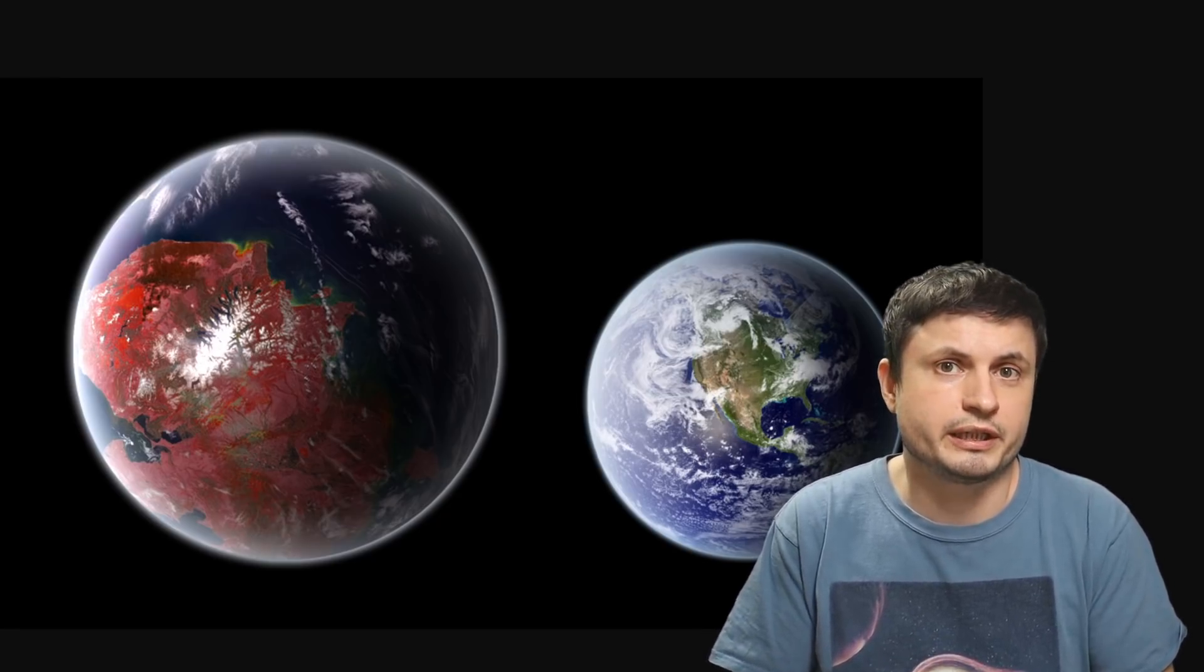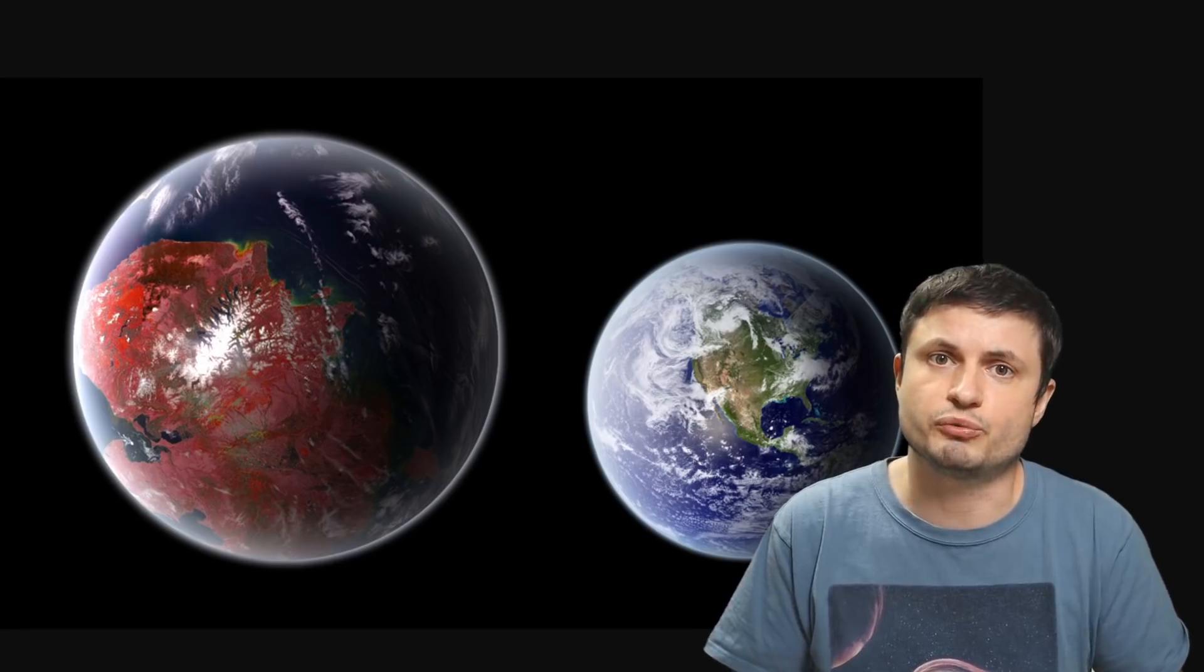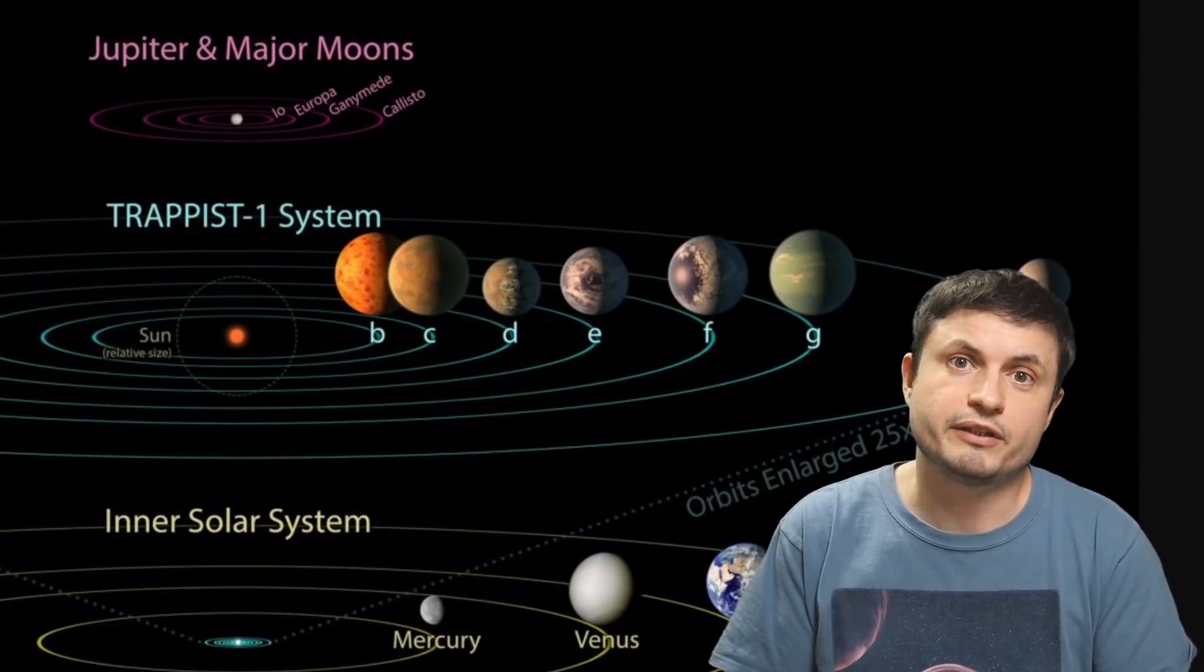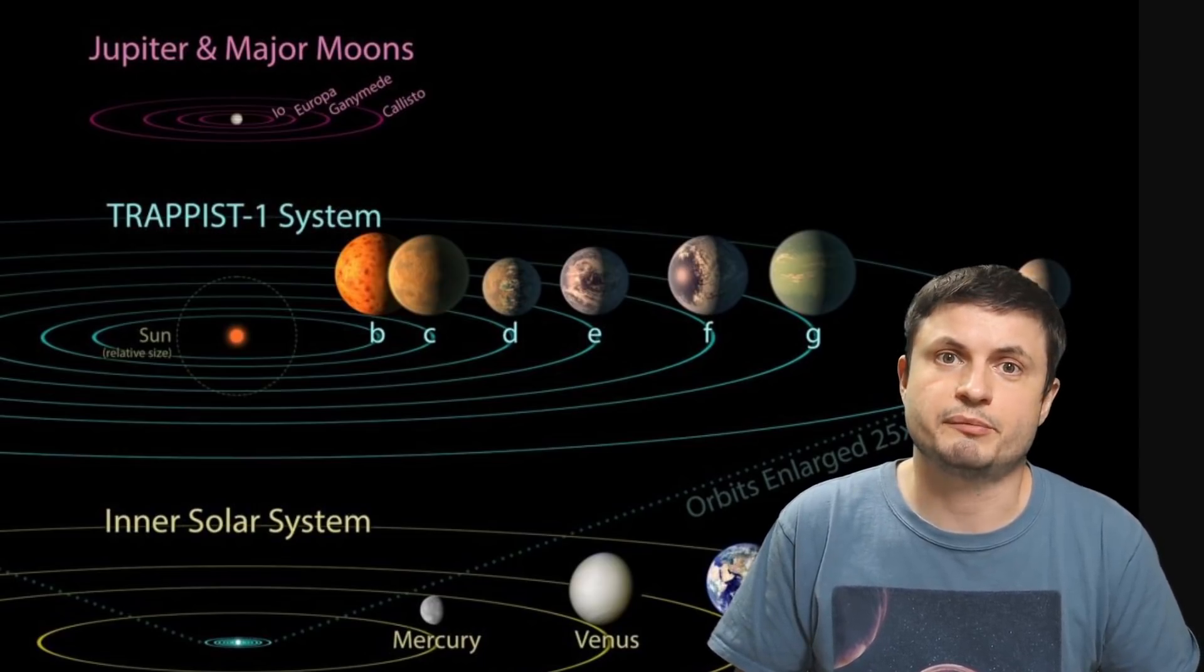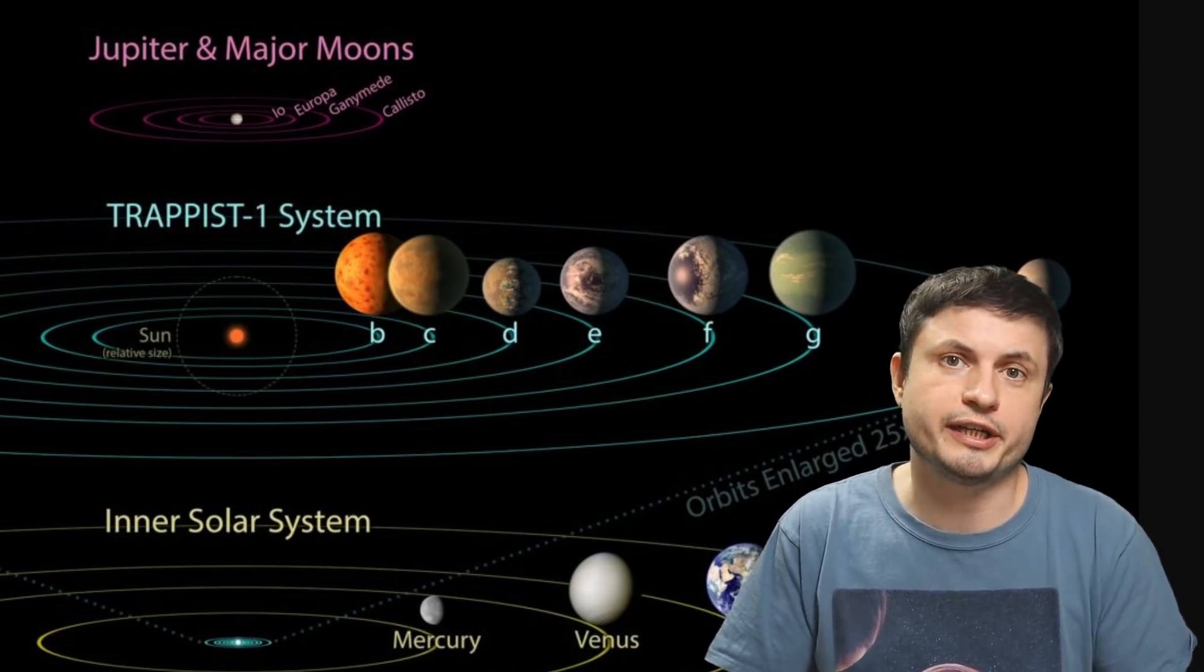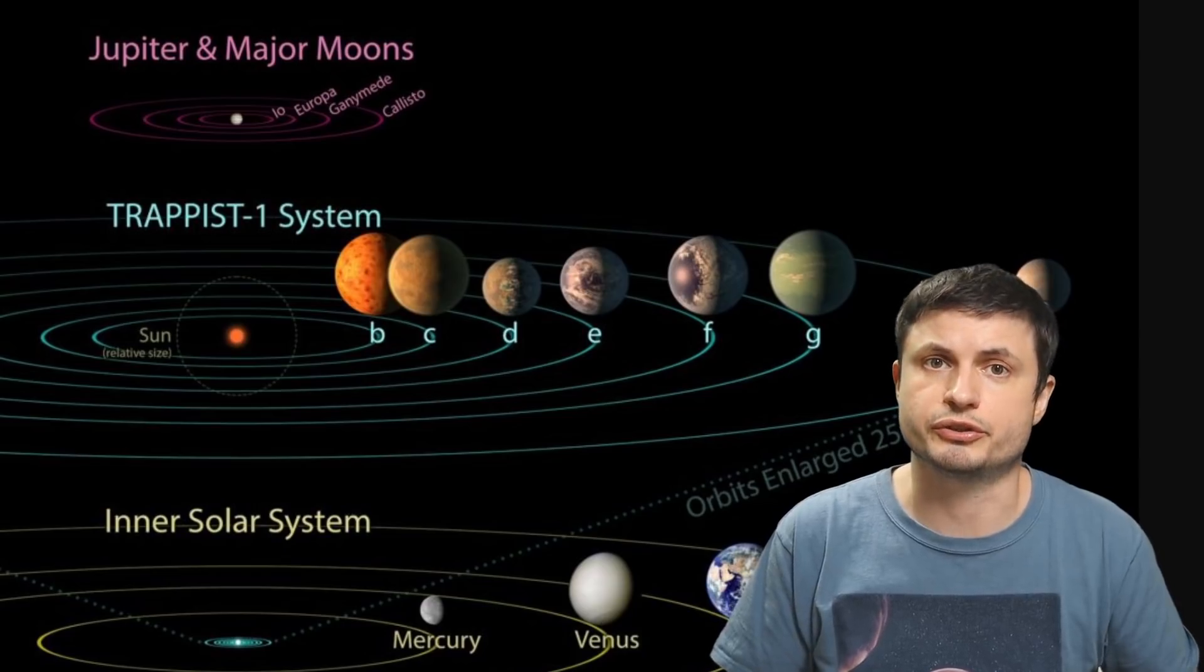And obviously the first such target is probably going to be the famous TRAPPIST-1 system. The system with seven different terrestrial objects, where even one of these objects possessing magnetosphere could actually have a high chance to have habitable conditions on the surface. But obviously all of this is still in far future once we have better techniques and of course better observatories watching the night skies. But I guess until we discover more or until we find another exoplanet that exhibits these magnetosphere effects, that's pretty much all I wanted to mention in this video.